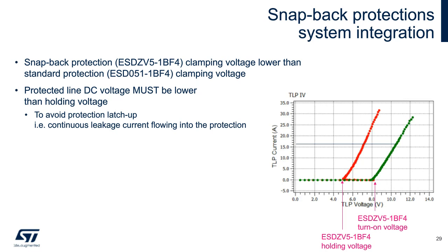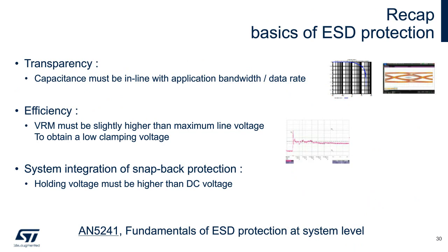To select the right ESD protection, three parameters must be validated. First, the ESD protection must be transparent for the application — the protection capacitance must be in line with the application bandwidth (if analog) or data rate (if digital). These curves are reported on the data sheet. Second, the ESD protection must be efficient when the event is present. TLP IV curves are present on the ESD data sheet. To select a protection with good clamping, it is recommended to select an ESD protection with a VBR just above the maximum line voltage. To avoid snapback protection latch-up, holding voltage must be higher than the DC line voltage. All this information is available in the application notes 'Fundamentals of ESD Protection and System Level' on ST.com.